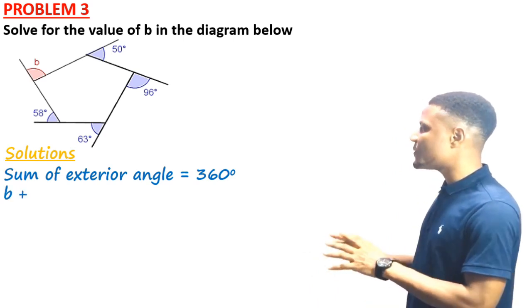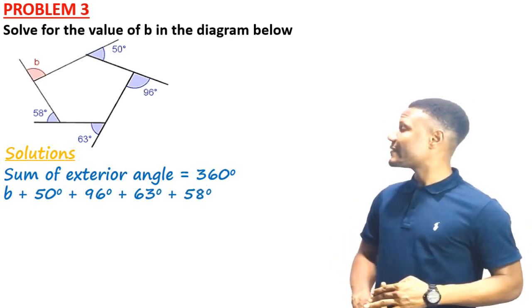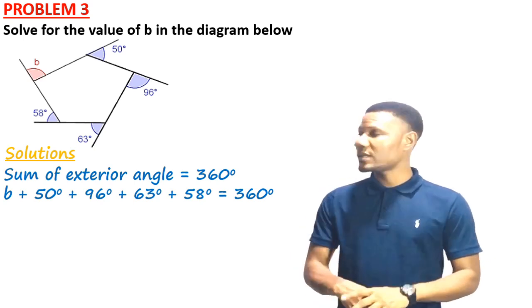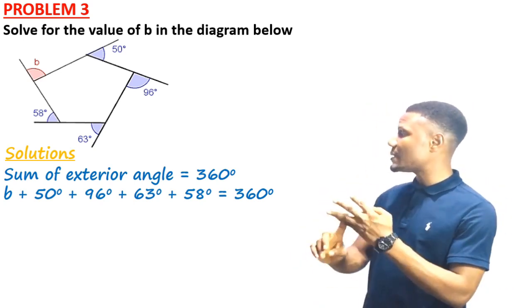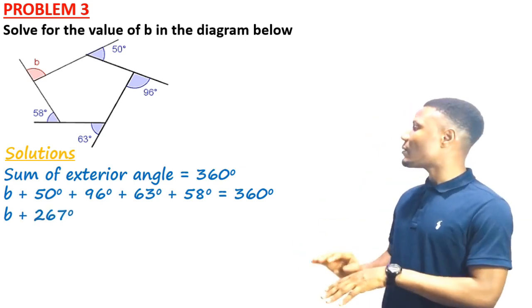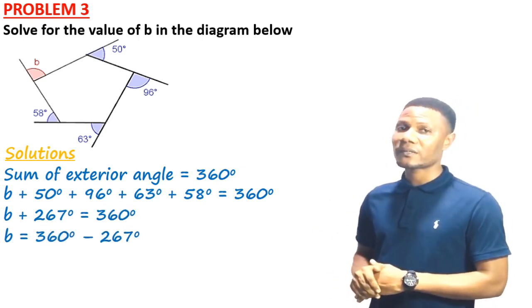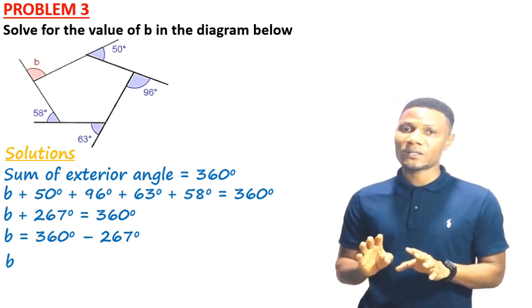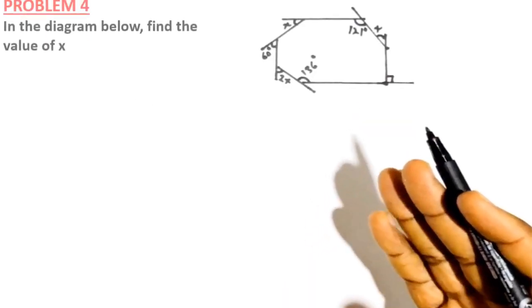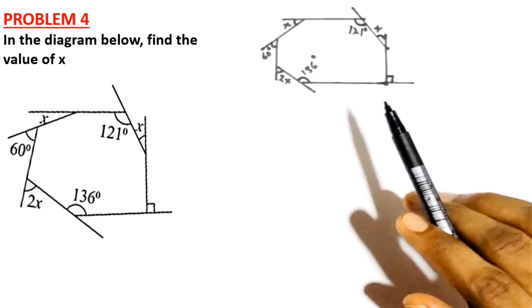So: b + 50° + 96° + 63° + 58° = 360°. Adding the known angles: 50 + 96 + 63 + 58 = 267°. Therefore b = 360° − 267° = 93°. The value of b is 93°.